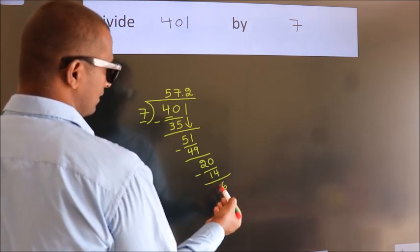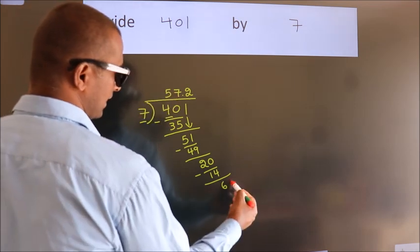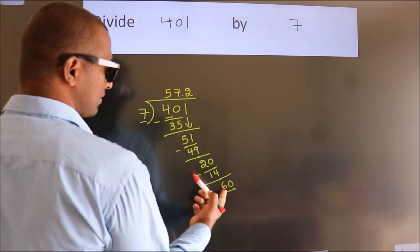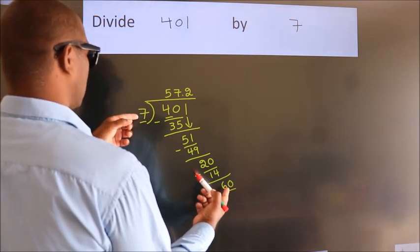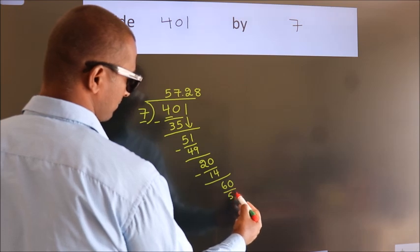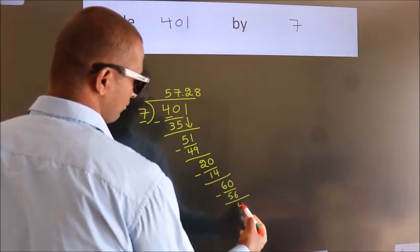After this, we already have the decimal, so directly take 0, so 60. A number close to 60 in 7 table is 7 eights, 56. Now, we subtract, we get 4.